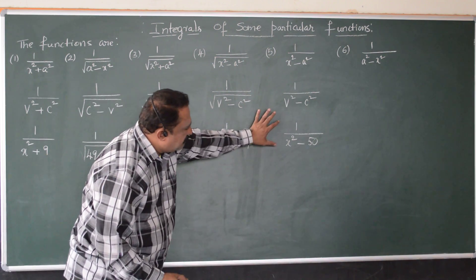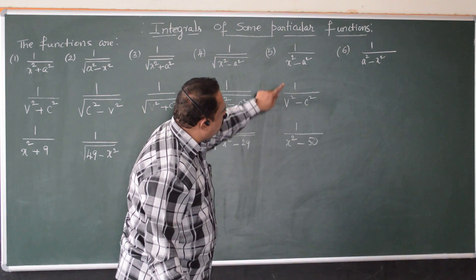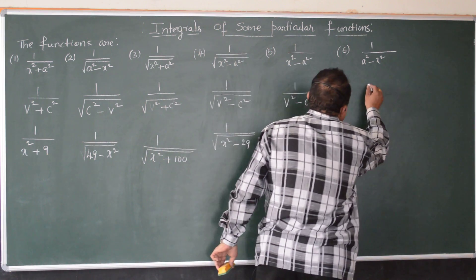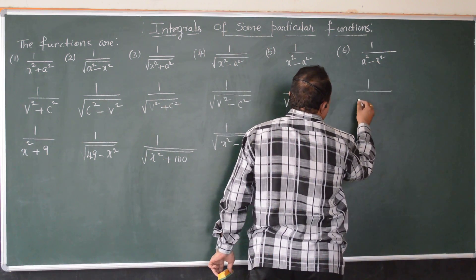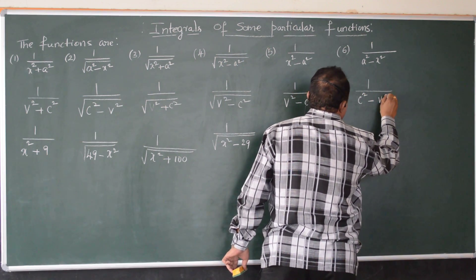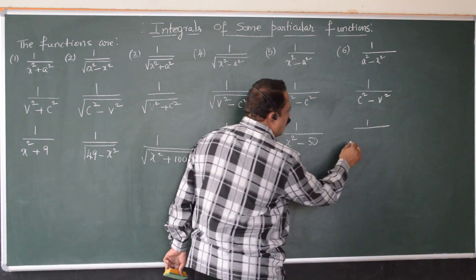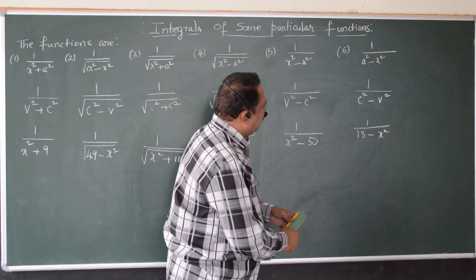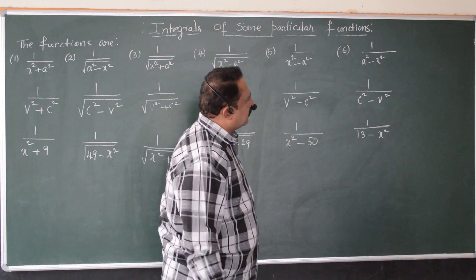Whenever we happen to see these kinds of problems for integration, we just apply the standard result. The fifth function is 1 over x² minus a², that is, variable square minus constant square. The sixth function is 1 over a² minus x², that is, constant square minus variable square. For example, integrating 1 over 13 minus x² uses the method for function number 6.